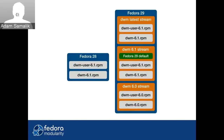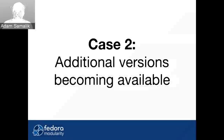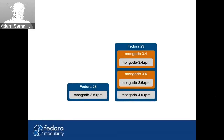That was moving packages from the traditional to the modular world. Let's look at case number two: additional versions becoming available. I have MongoDB as an example. In Fedora 28, we had MongoDB 3.6. In Fedora 29, this package was upgraded to 4.0, so everything is the same as normal. But in addition, they added two module streams — one is 3.6 from Fedora 28, and there is one even older in case you want to use it on a server or have a dependency on it.